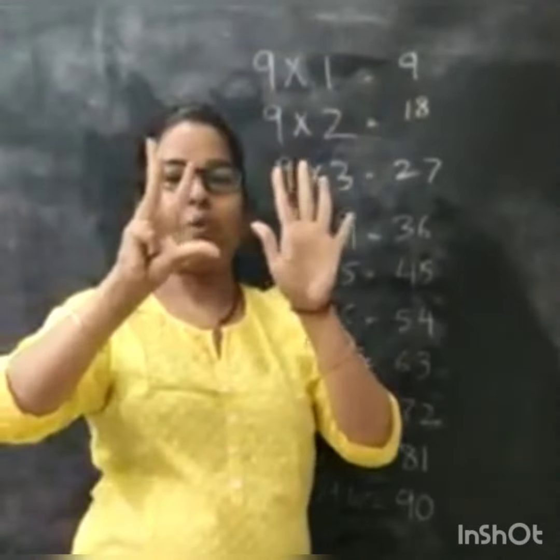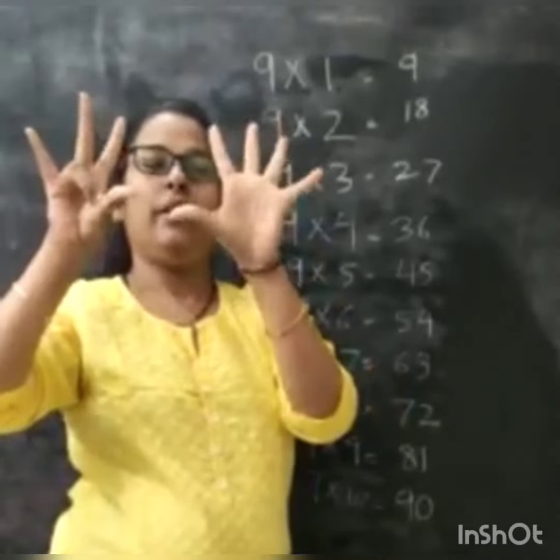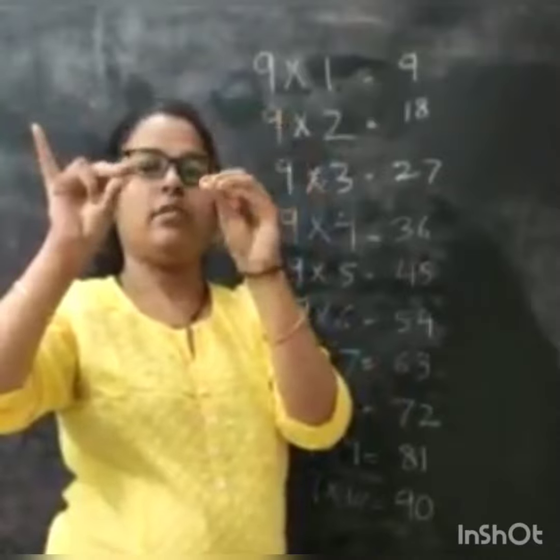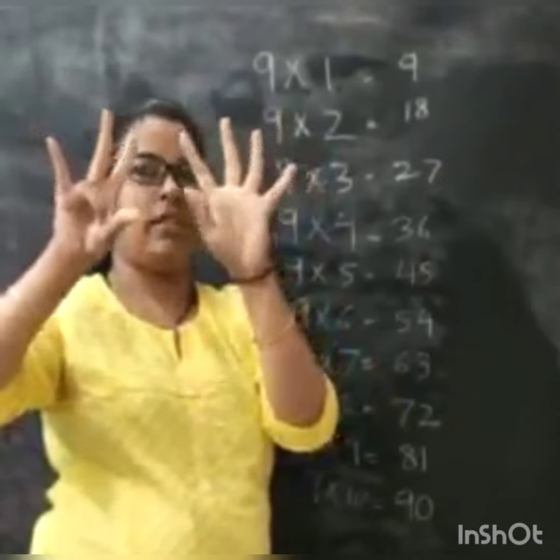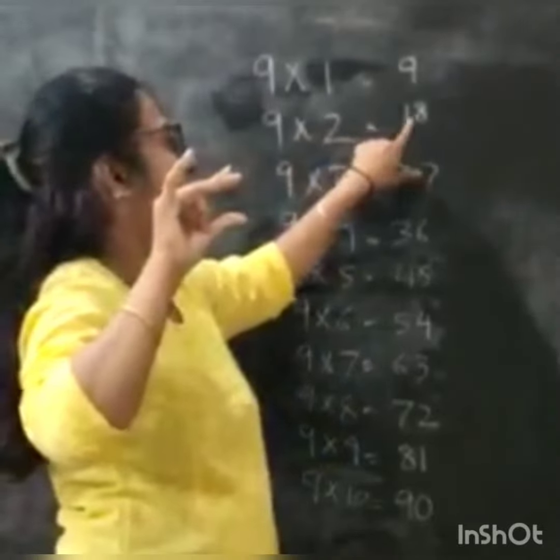Now I will close my second finger. So 1 over here. How many open you can see here? This side, 8. So 1, 8. So 9 times 2 is 18.